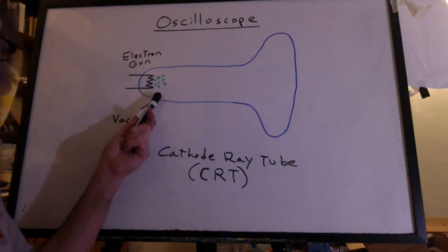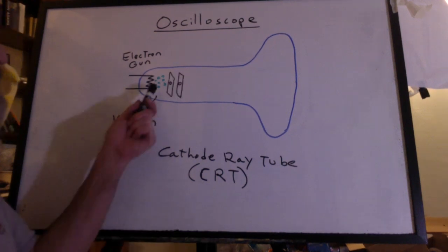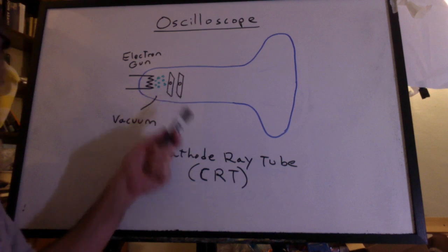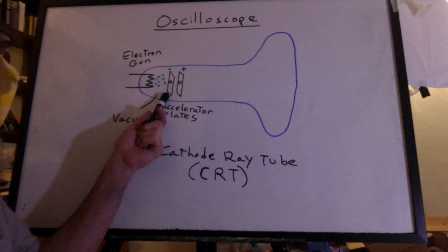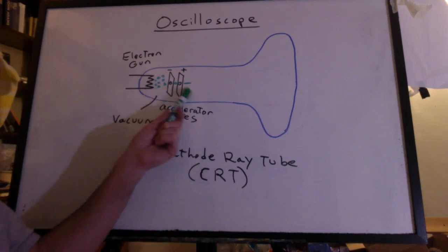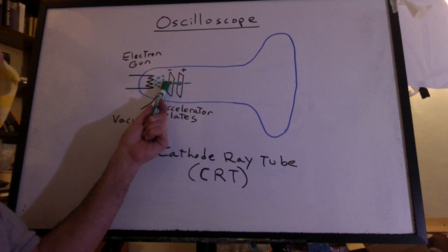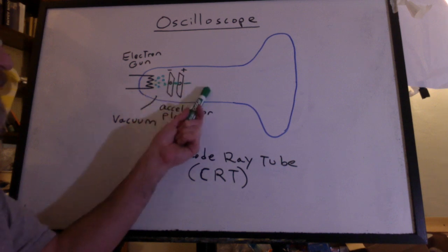A cloud of electrons are emitted and some of those electrons will pass through a hole in these two accelerator plates. The plate on the right is positive, the plate on the left is negative. There's no electric field outside of these plates, but when the electrons get in between the plates, they feel a strong acceleration to the right.